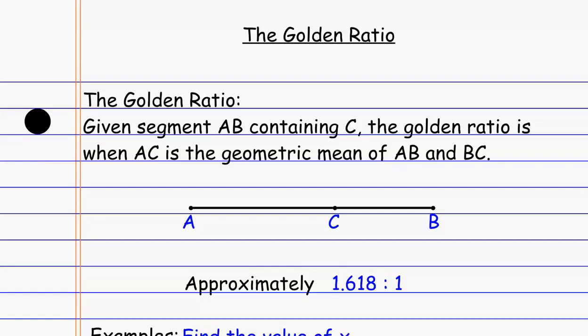Hi there, folks. Today we're taking a look at the golden ratio. The golden ratio is just a special ratio that we come up with. If we take a look at something like this segment AB that contains point C, the golden ratio is when AC is the geometric mean of AB and BC. In other words, when the long segment is the geometric mean of the entire segment and the short segment.